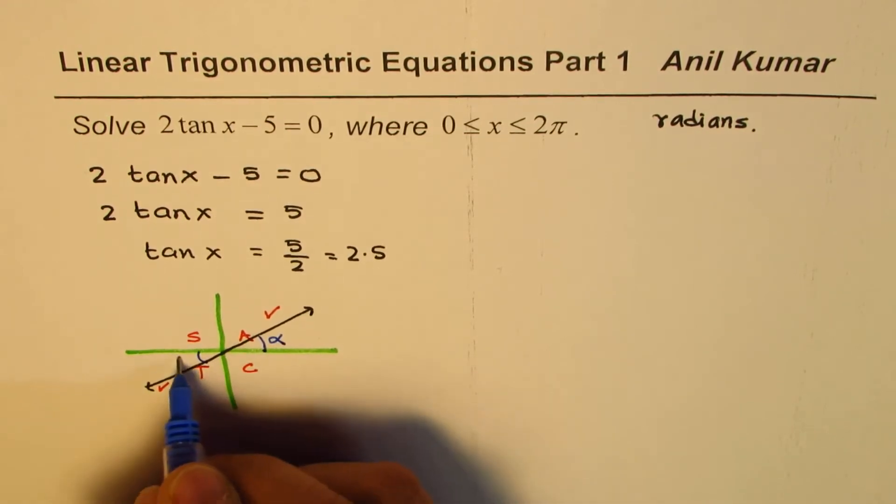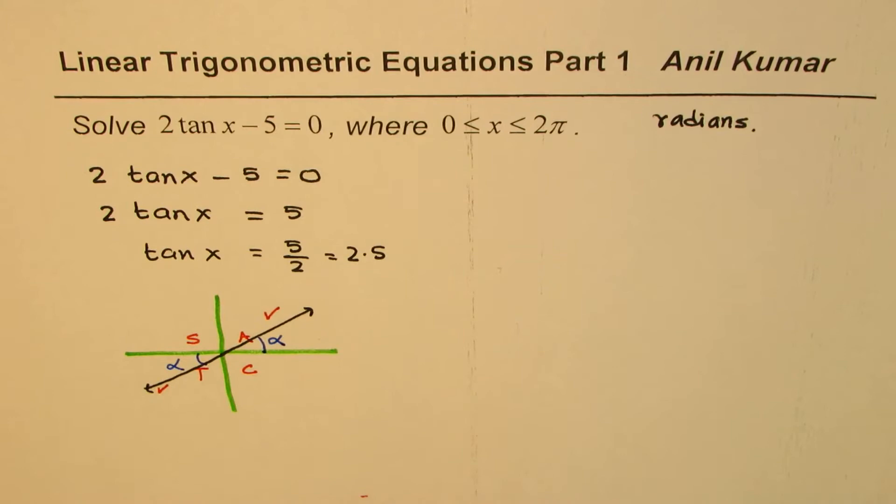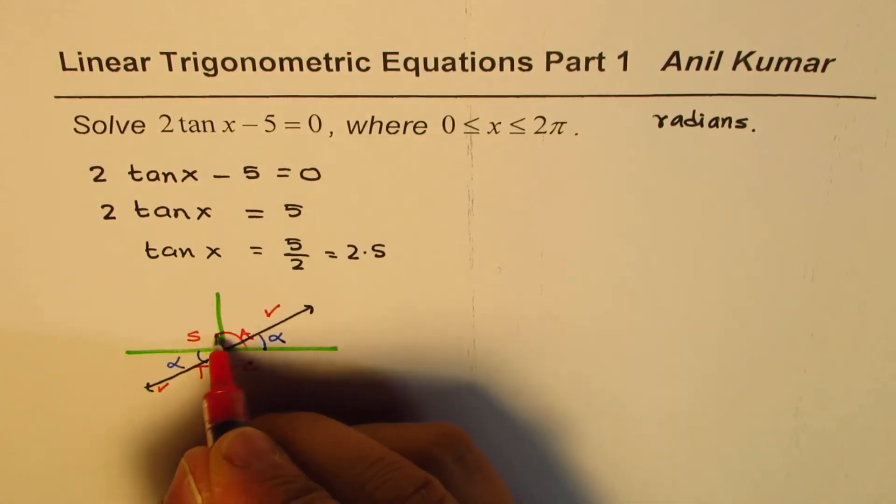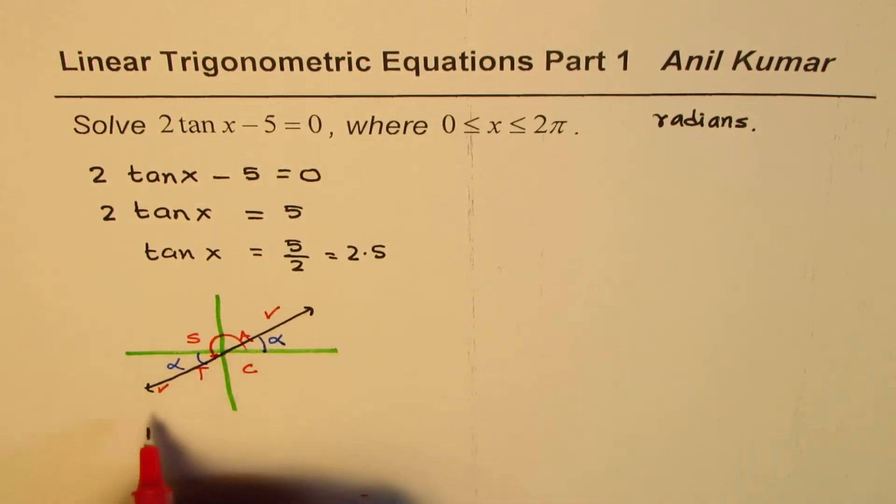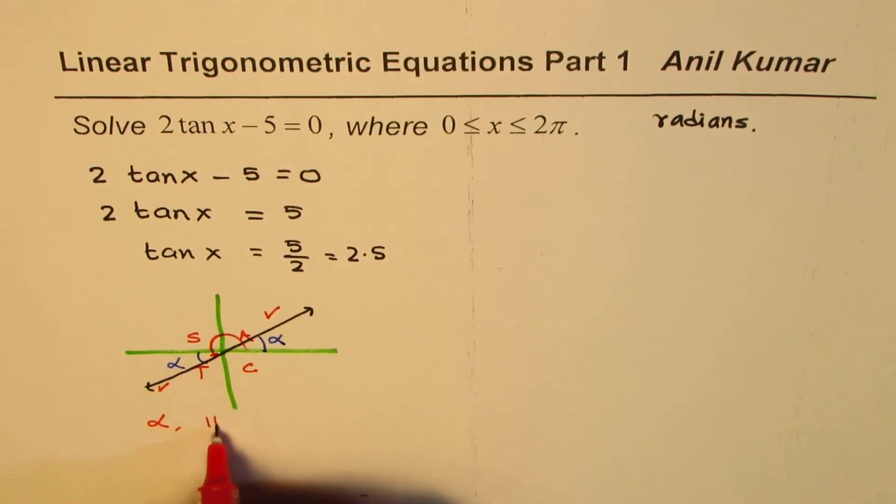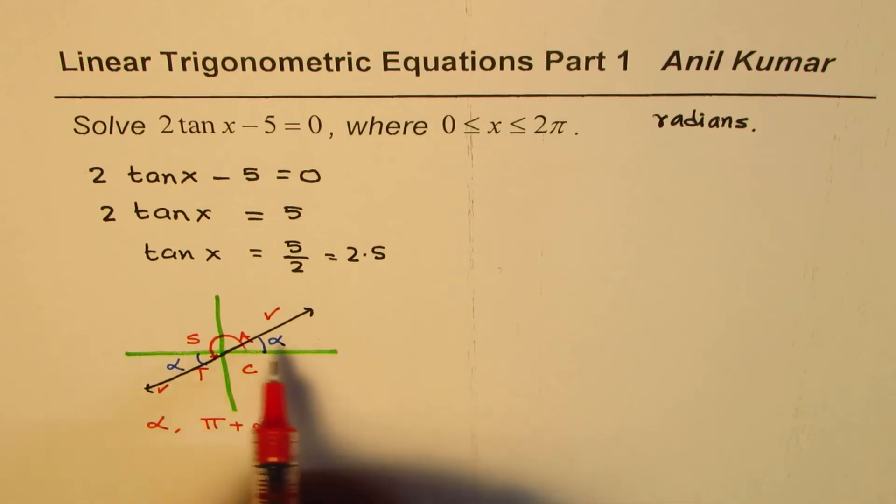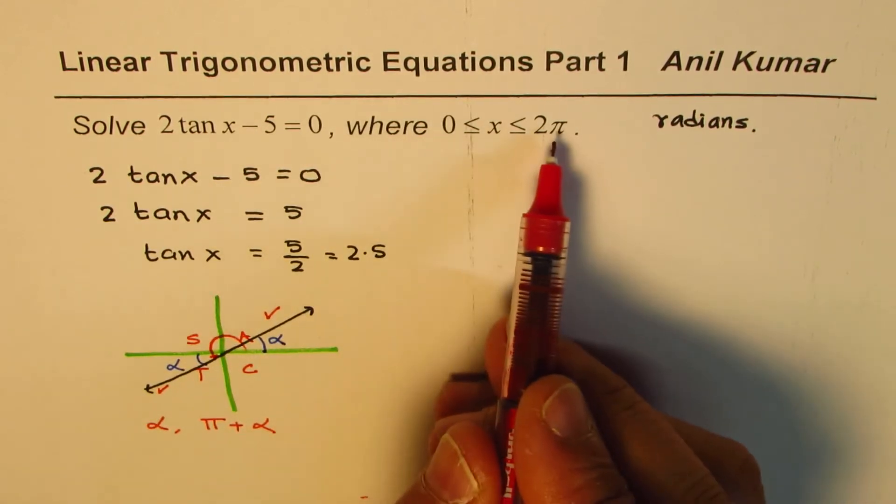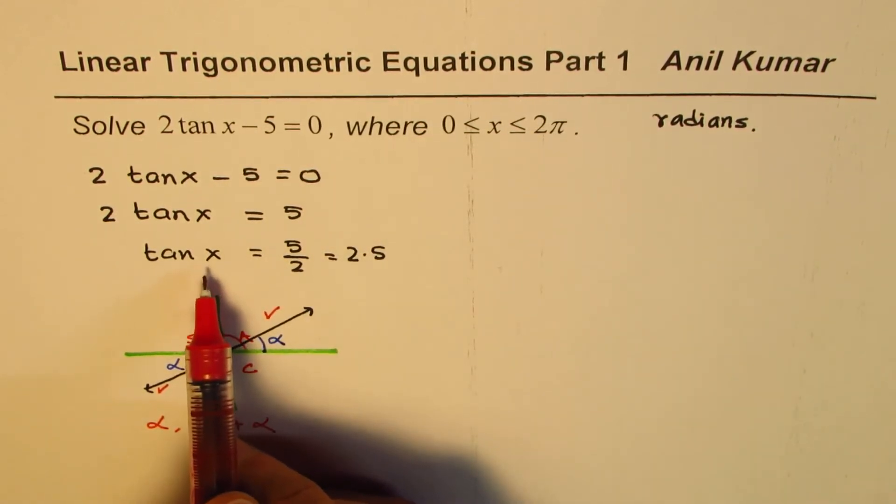The other angle, this is also alpha, directly opposite. The other value of x will be pi plus alpha. So we are looking for two values: one is alpha, the other one is pi plus alpha. These two values are within 0 to 2 pi and are the solutions for this given equation.